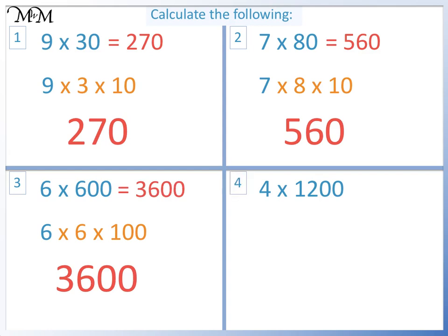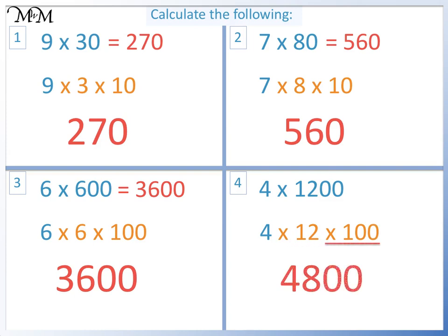Question 4: 4 times 1200. This is the same as 4 times 12 times 100. 4 times 12 equals 48, times 100 equals 4800. So 4 times 1200 equals 4800.